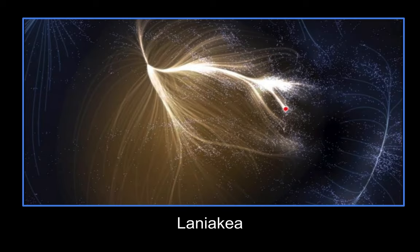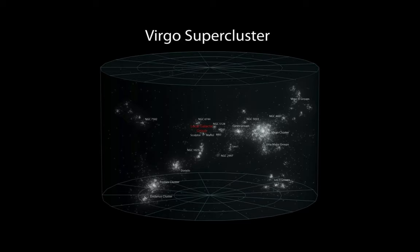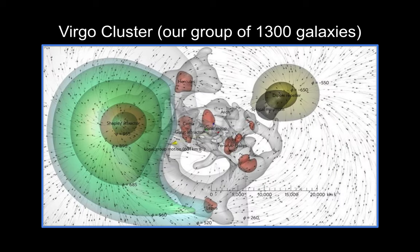Those giant groups of galaxies formed together into these almost like little rivers of impossibly large distance. And as time has gone on, they get further and further away from each other. The Virgo Supercluster is a group of thousands upon thousands of galaxies. You still can't even see our galaxy inside of this because there are thousands upon thousands of galaxies just in this group. We've got to zoom in further. We get to the Virgo cluster, which is 1,300 galaxies.